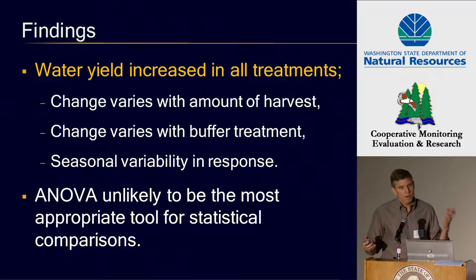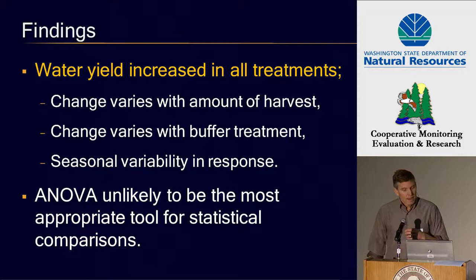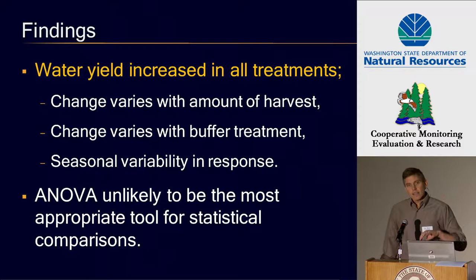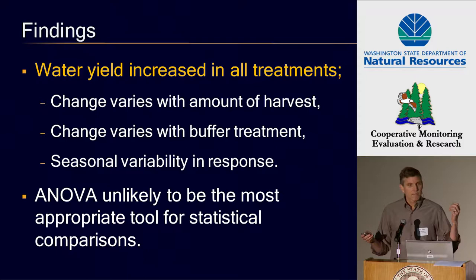We also saw a change that varied with the buffer treatments. Again, to be expected — we have vegetation left down in the riparian area, we increased light to it, and that vegetation can take up some of that water. Finally, we saw seasonal variability in the response. And that third piece leads me to what I'm going to focus on for a lot of my talk, which is really for the scientists: ANOVA, analysis of variance, isn't probably the most appropriate way to look at this sort of data.